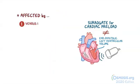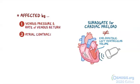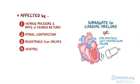The five factors affecting left ventricular end-diastolic volume and preload are: venous pressure and rate of venous return, atrial contraction, resistance from valves, ventricular compliance, and heart rate.